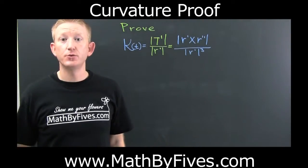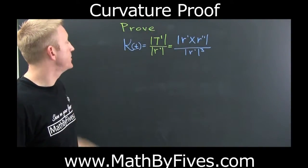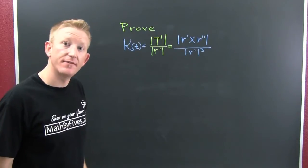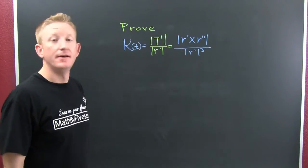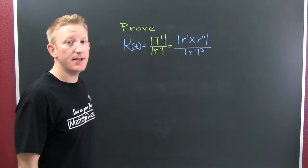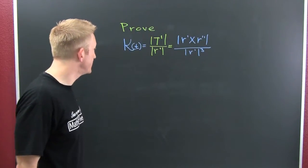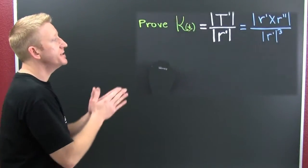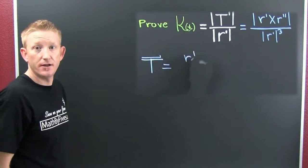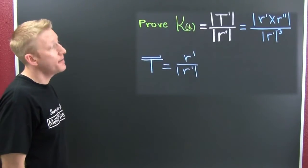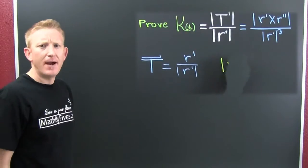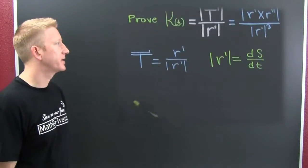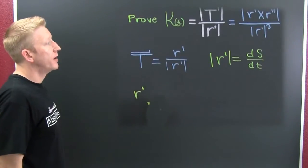What we want to prove is that the magnitude of the derivative of the unit tangent divided by the magnitude of the derivative of the vector-valued function equals the magnitude of the first cross the second divided by the magnitude of the first cubed. This is a proof by construction. Since T is the unit vector in the direction of r prime, T equals r prime divided by the magnitude of r prime, and we define the magnitude of r prime as ds/dt.